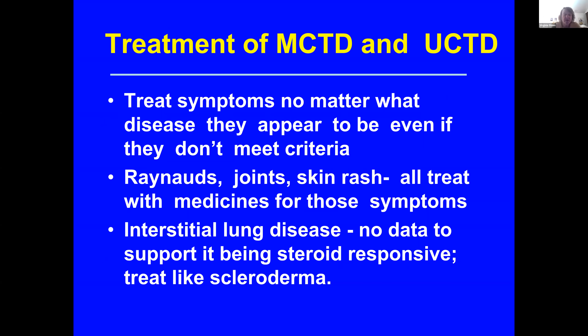The treatment of overlap syndromes, mixed connective tissue disease, and UCTD are really treatment of the symptoms in the organs, no matter what disease they are said to have. If you have lupus and severe interstitial disease, you treat the interstitial disease. Raynaud's, joints, and skin rashes are all treated with the medications we use for those things. The main difference is that steroids are not very helpful in MCTD for the interstitial lung disease, and we really need to use more potent immunosuppressive medicines like we use in scleroderma.